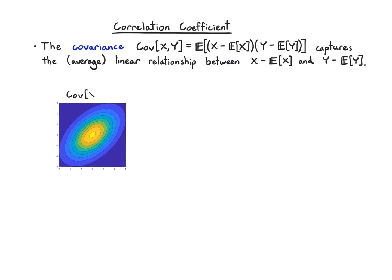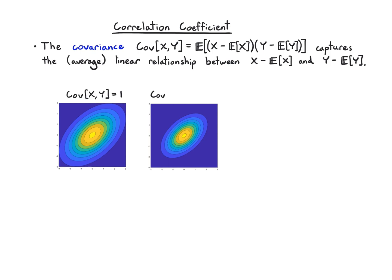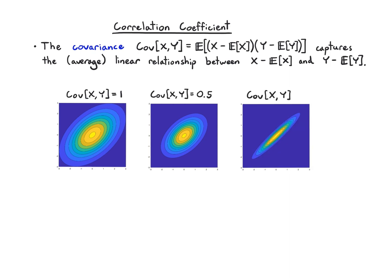Here are some examples of different distributions: this one with covariance 1, this one with covariance half, and this one also with covariance 1. The two distributions on the left look similar except the middle one is shrunk down, but they have different covariances, whereas the distribution on the right has the same covariance as the left but looks much more stretched out. The covariance is quite sensitive to the scale of x and y.